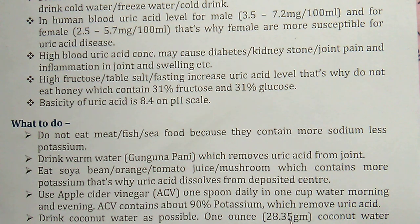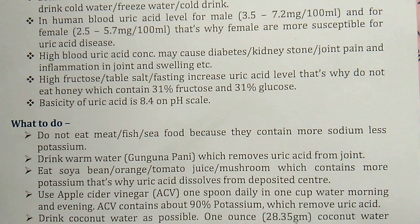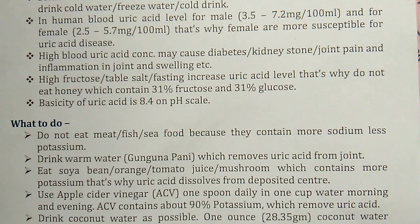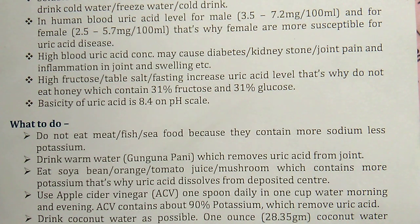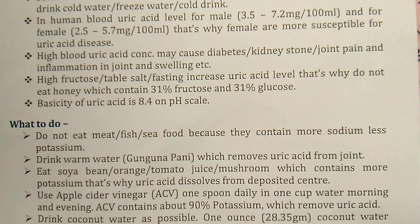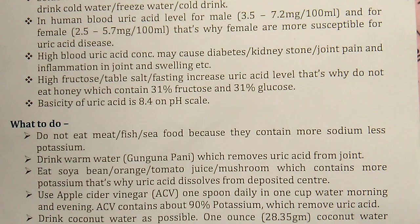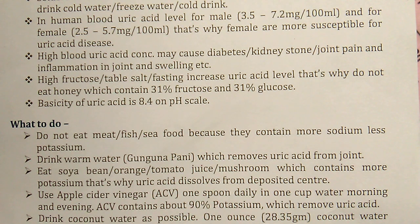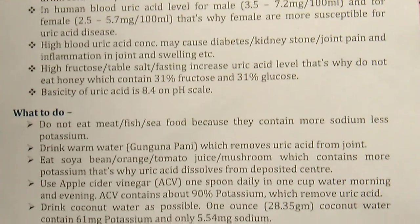Drink coconut water as much as possible. One ounce (28.5 grams) of coconut water contains 6.61 milligrams of potassium and only 5.54 grams of sodium, so coconut water is a very suitable drink for those with high uric acid. Always use foods that contain more potassium and less sodium.